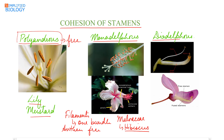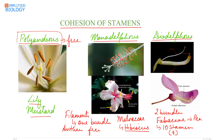Diadelphous condition means the filaments unite to form two bundles and the anthers are free. This is the characteristic of family Fabaceae, the pea family, in which ten stamens are present. Nine filaments are united while one is free — these are the nine filaments united while the one free stamen is separate. Seen in case of family Fabaceae.